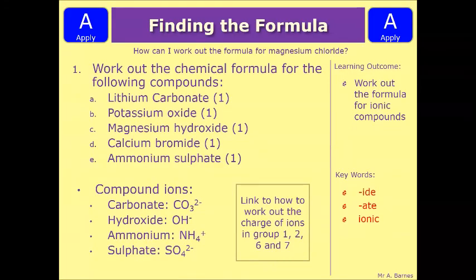Let's have a look at a quick question for this then. So question 1 says, work out the chemical formula for the following compounds. You've got lithium carbonate, potassium oxide, magnesium hydroxide, calcium bromide and ammonium sulphate. So if we break that question down,